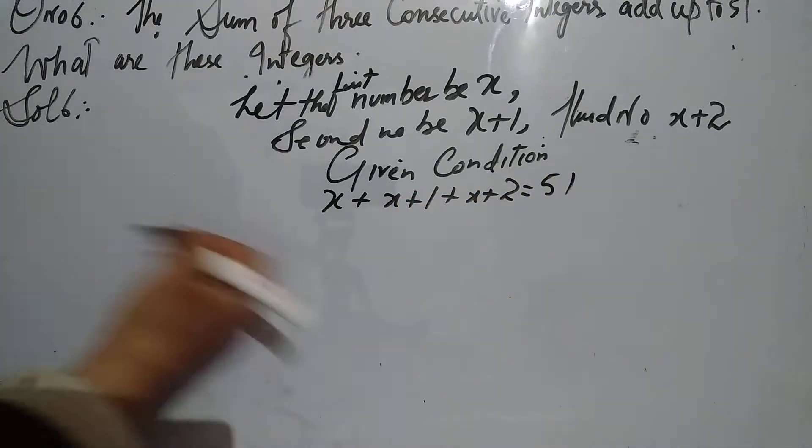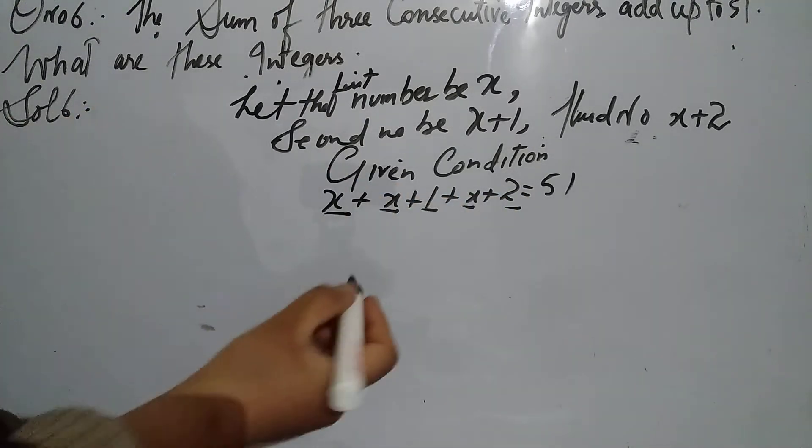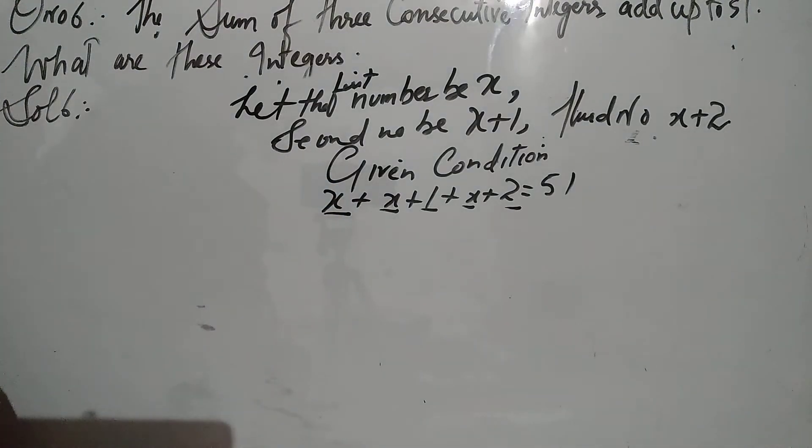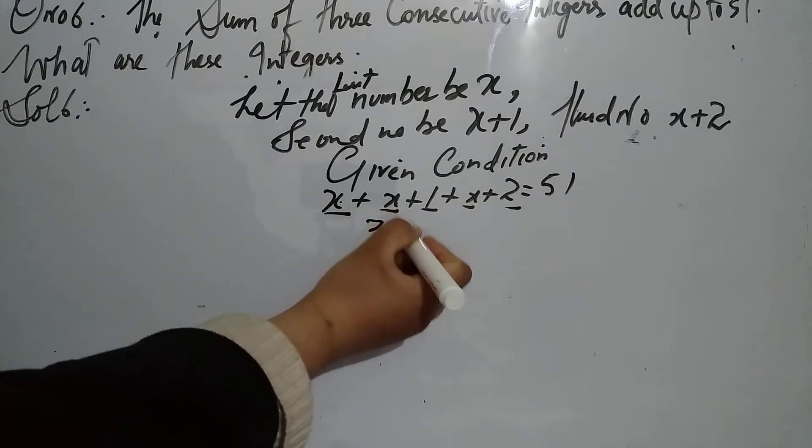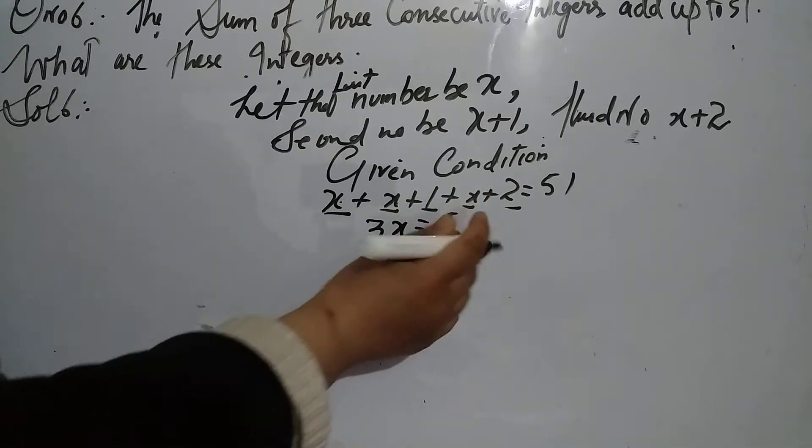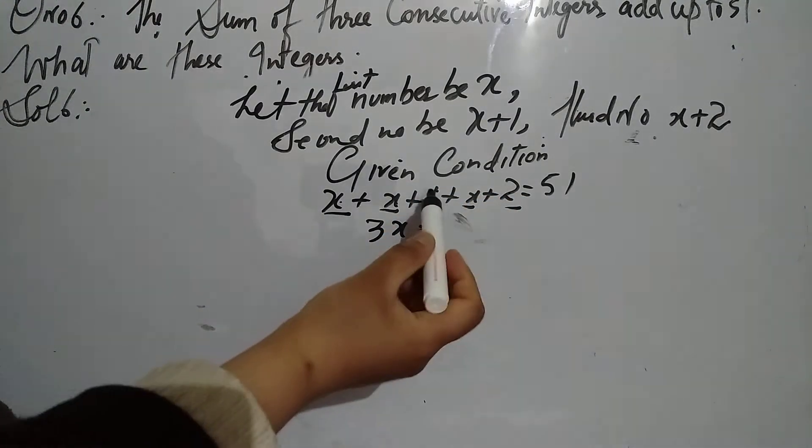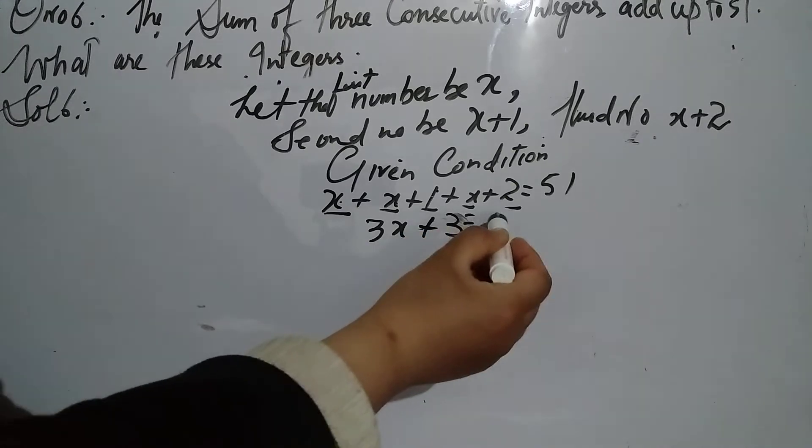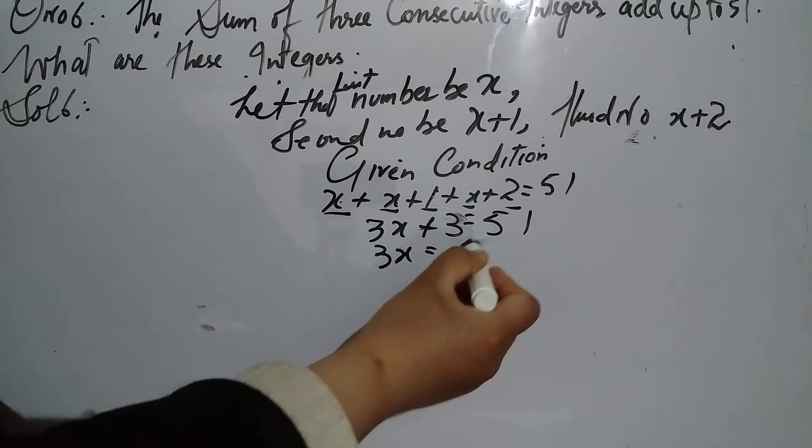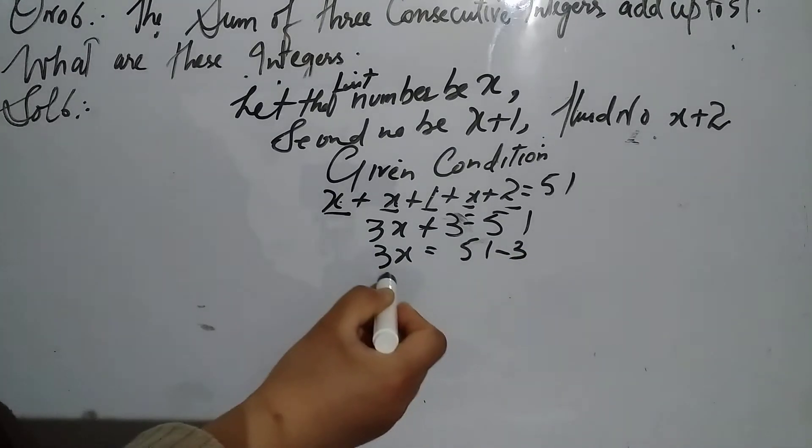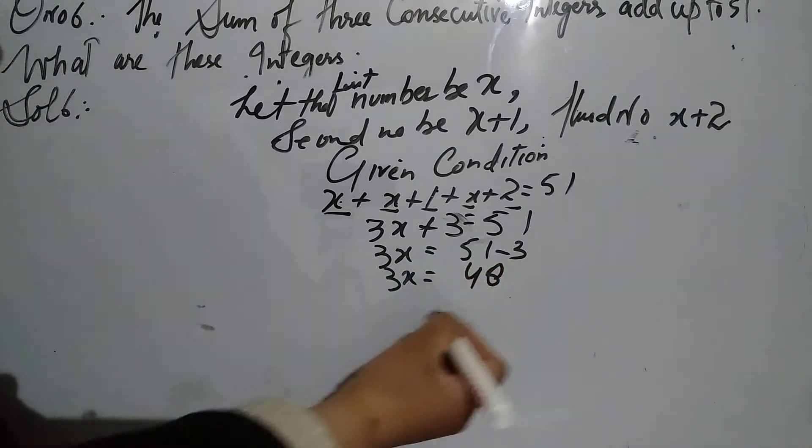Here we have same variables and constant terms. Variables are added with variables and constant terms with constant terms. So we have 3x plus 3 is equal to 51. Now we will transpose 3: 3x will be equal to 51 minus 3, it will be 48.